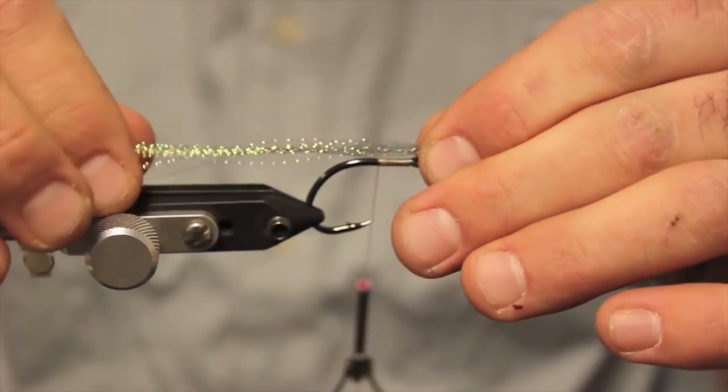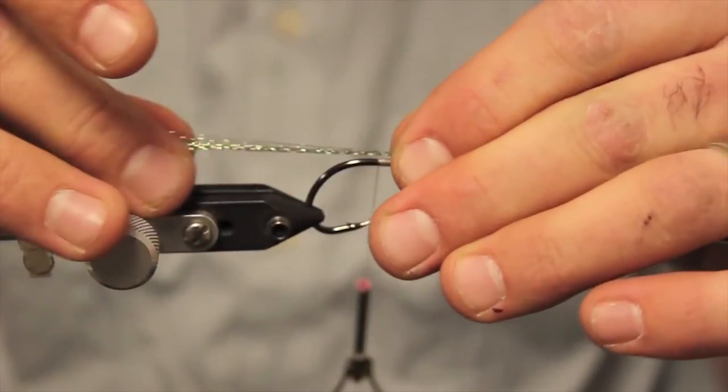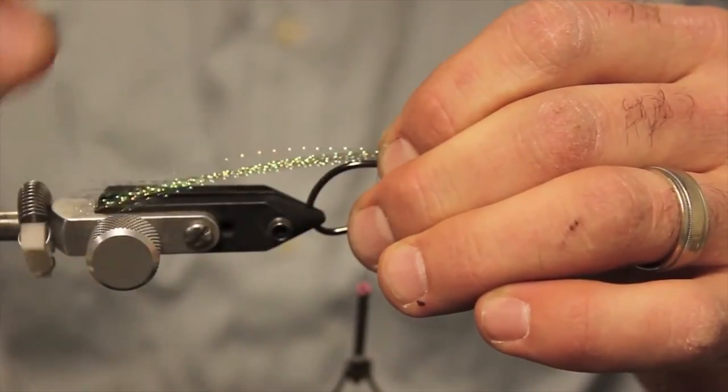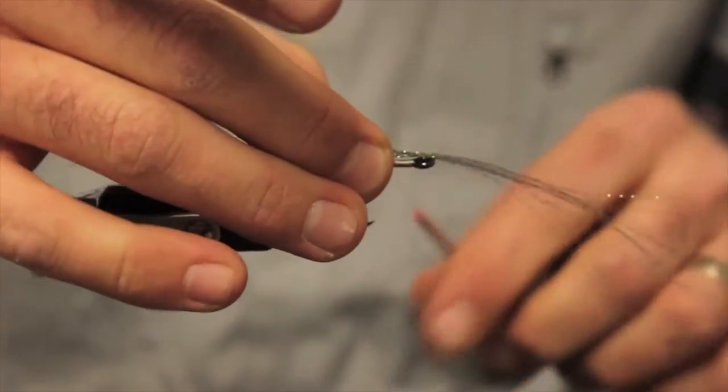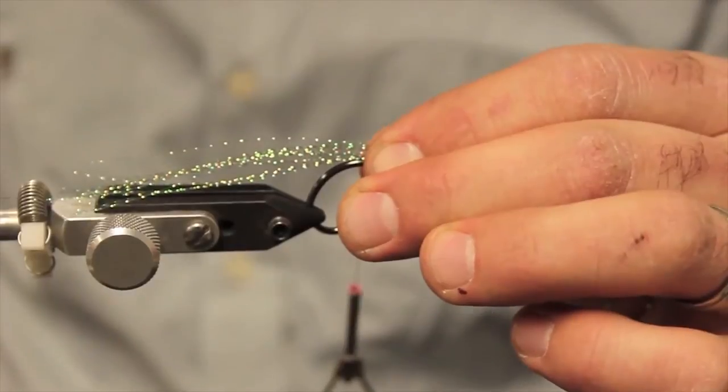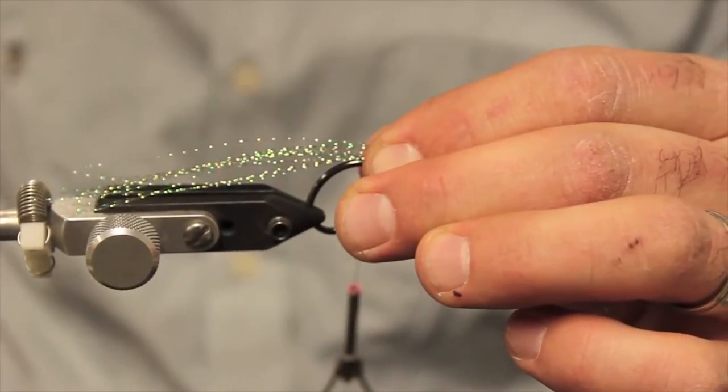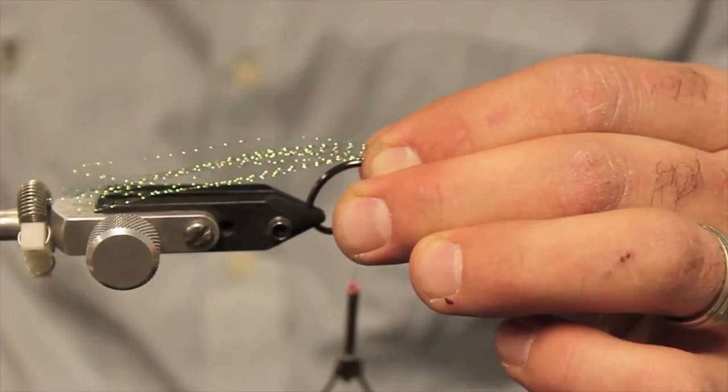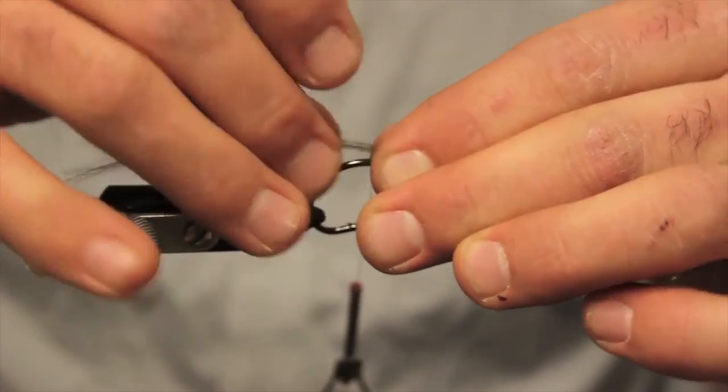Now, this Crystal Flash is kind of going to set your body length. This is basically going to be about the middle of the fly right here. So, it's going to be the first part that goes on. So, usually this sardina pattern, they run anywhere from two to four inches in length.